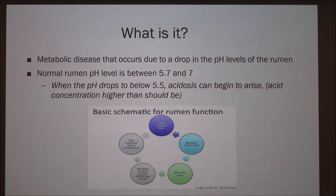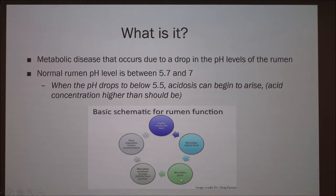That's simply because the acid concentration is higher than it should be. A general scheme for how the rumen is supposed to function: cattle consume the feed, then the microbes begin to digest the feed in the rumen. The microbes grow, produce energy in the form of VFAs and protein, and then the cow regulates the rumen environment and the cycle continues.